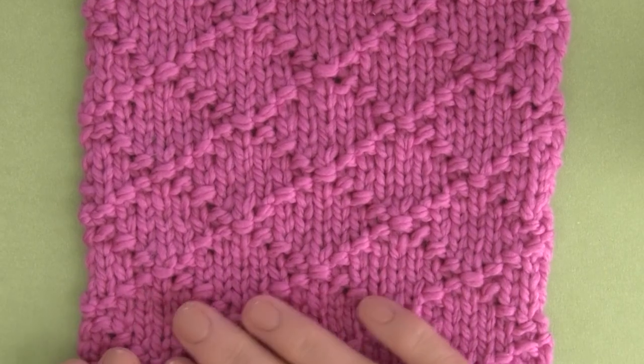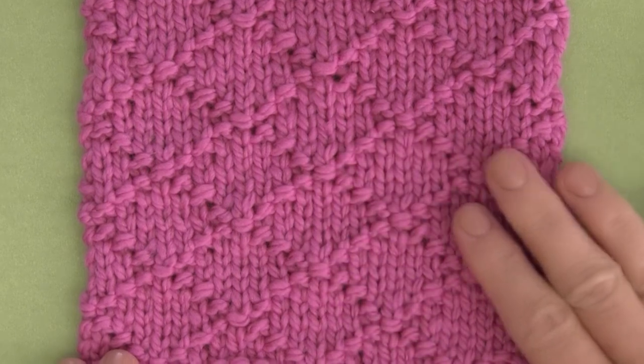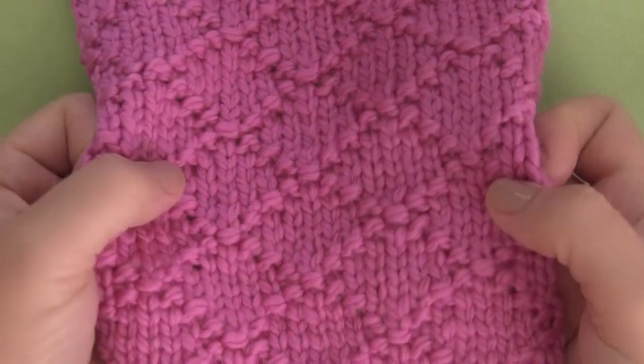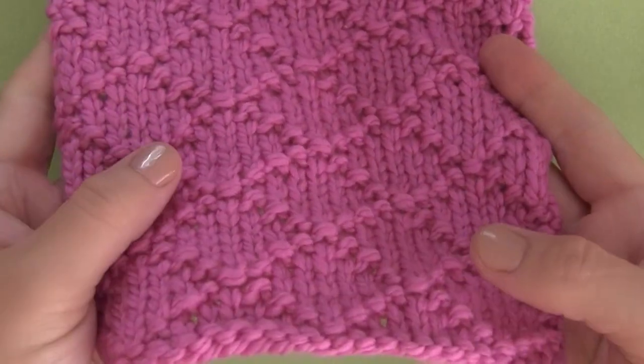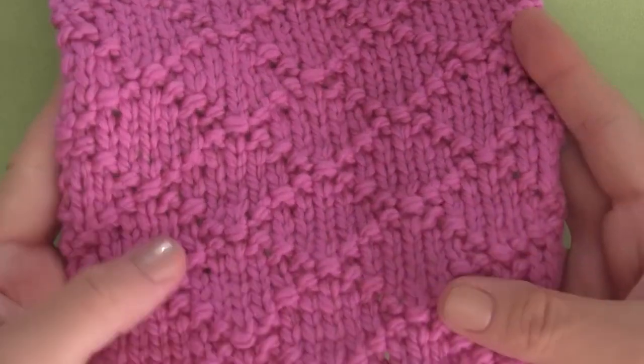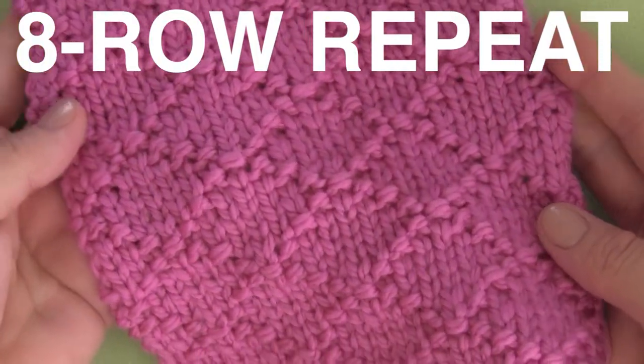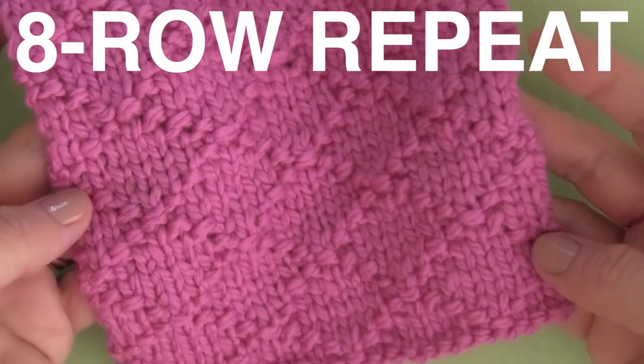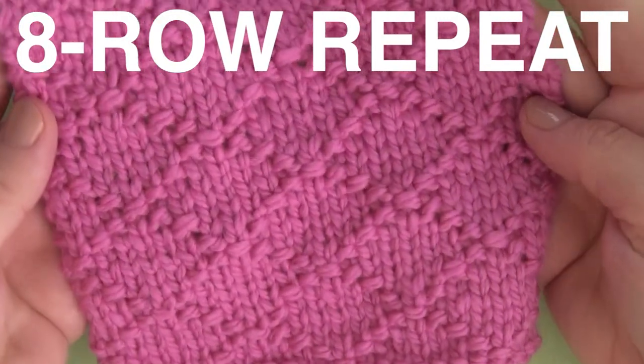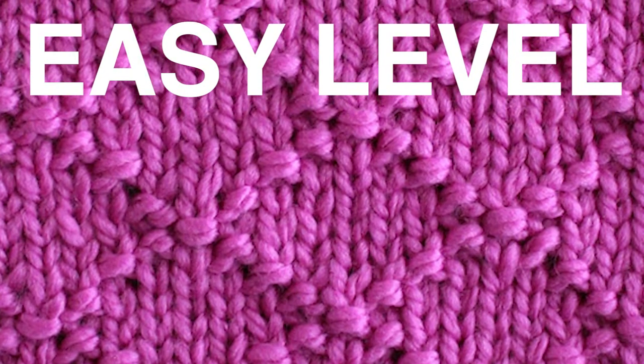Today we are knitting up this Diamond Brocade pattern. It's a really elegant design created by a simple series of knits and purls. It's an 8 row repeat and it creates this fashionable textured graphic. It's an easy level project.